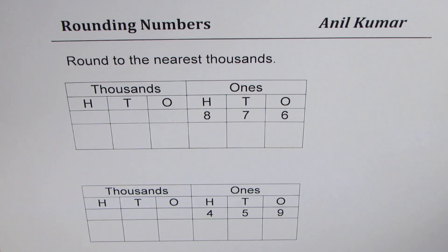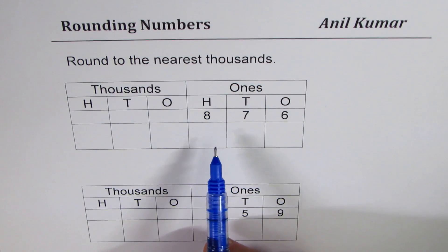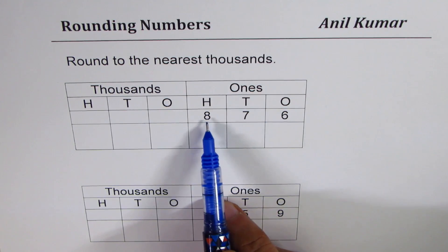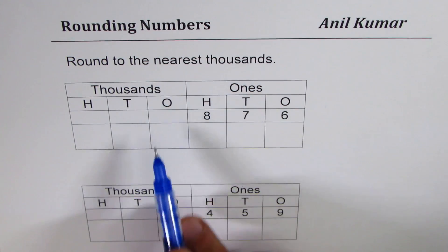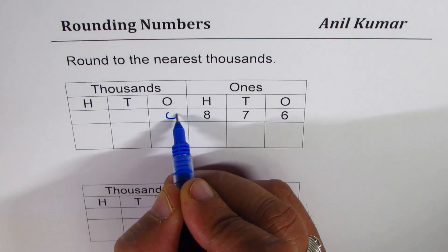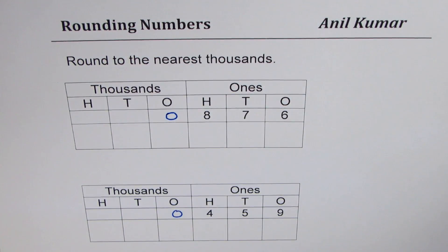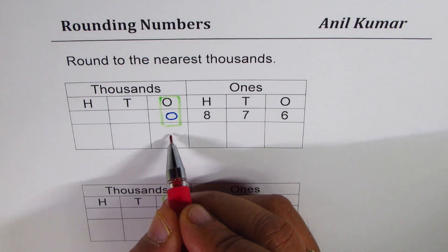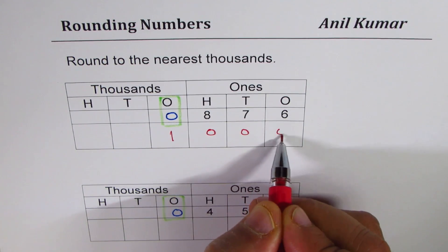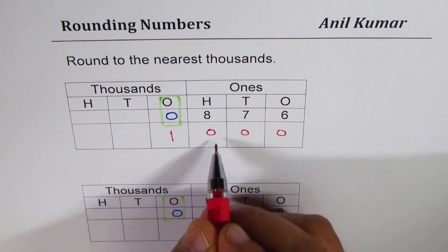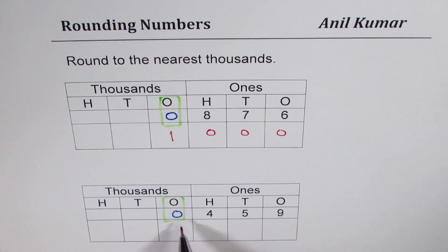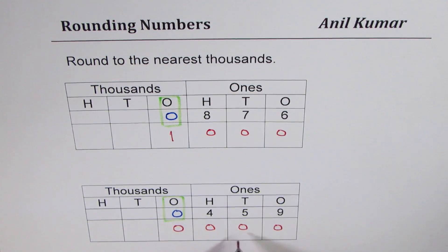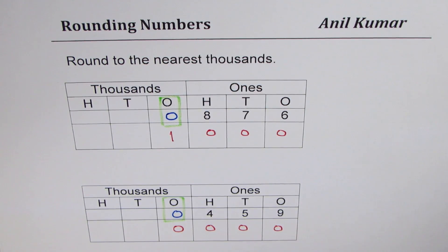We have a special case where we are rounding to nearest thousands but the numbers are in the hundreds. The first step is to identify the number in thousands place — since there is none, we put zero there. To round, check the number to the right of zero: if it is five or more, round higher, so zero becomes one. Therefore, 876 rounds to 1,000.